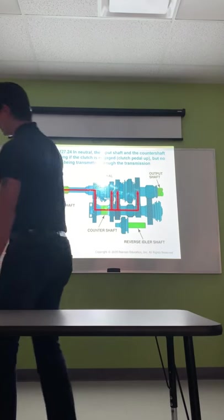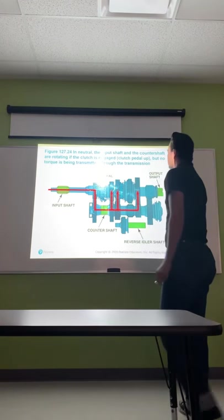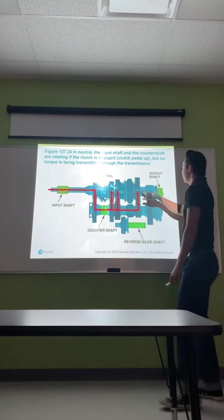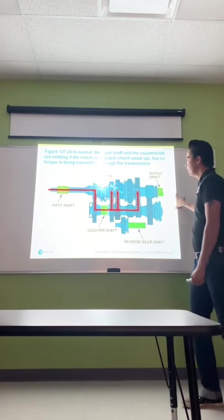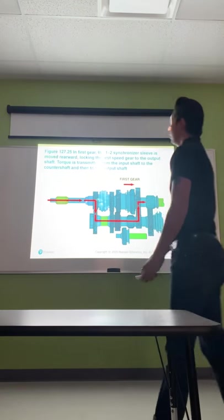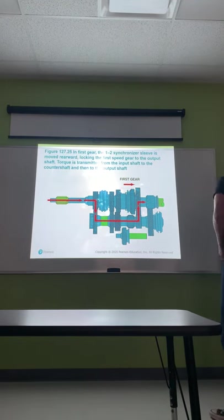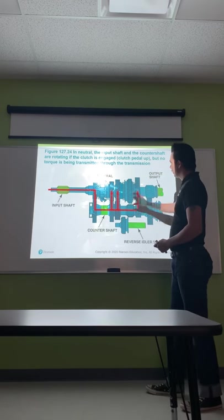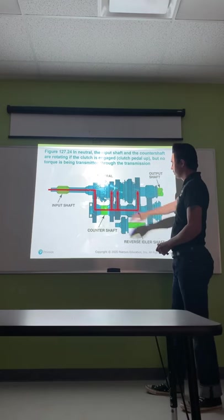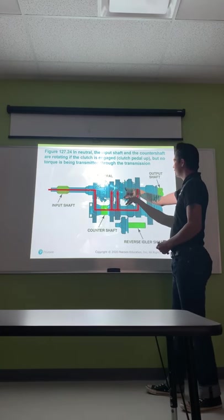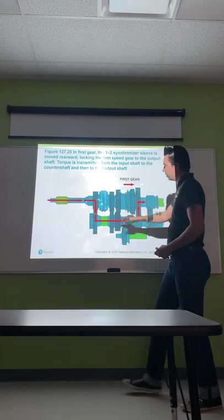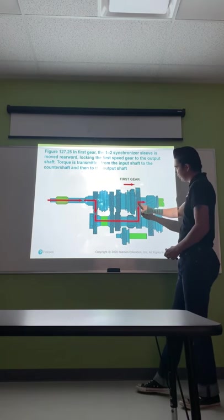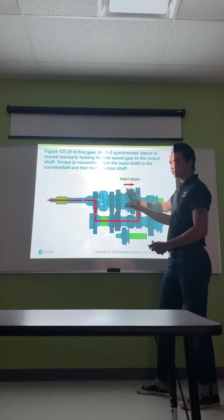In neutral, the input shaft and counter shaft are rotating with the clutch engaged, but no torque is being transmitted through the transmission — everything spins freely but nothing goes out the output shaft. In first gear, the collar shifts back and engages first gear. Power comes through, drops down to the counter shaft, goes up through first gear, and comes out. You can see first gear is larger because we're trying to multiply torque. In second gear, the collar shifts to center and pulls back toward second gear — power drops through the counter shaft, comes up to second gear, through the output shaft. In third gear, the first collar goes back to center and the second collar engages third gear — power goes down, up through third gear, across through the output shaft.